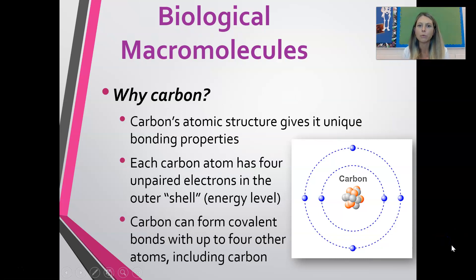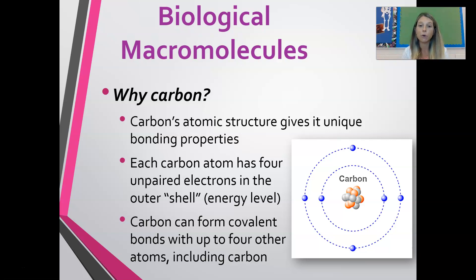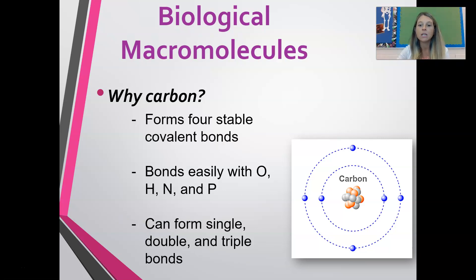Why carbon? What is so unique about carbon that makes it so important to living organisms? It has a pretty unique atomic structure. The outside electron shell, or energy level, of a carbon atom has four electrons, which means it can form four covalent bonds with up to four other atoms, including another atom of carbon. Those four covalent bonds are really stable bonds, which is one thing that makes carbon really useful.